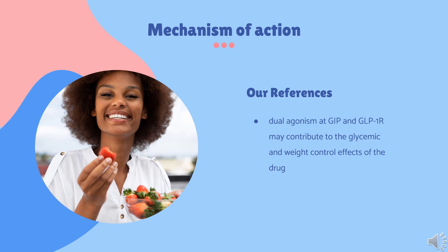Both glucose-dependent insulinotropic polypeptide (GIP) and GLP-1 are peptide hormones involved in glucose homeostasis. They promote glucose-stimulated insulin secretion from the pancreatic beta cells. GIP is the main incretin hormone that exerts insulinotropic effects in response to food intake. The exact mechanism of action of tirzepatide has not been fully elucidated; however, agonism at GIP and GLP-1R may contribute to the glycemic and weight control effects of the drug.